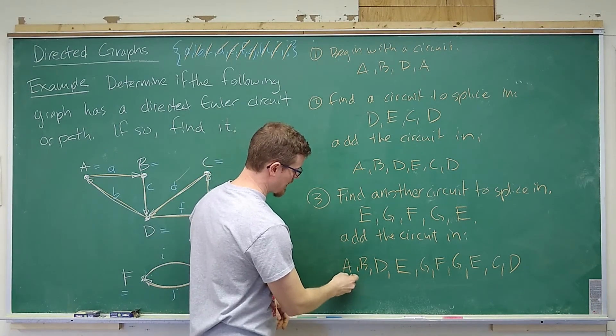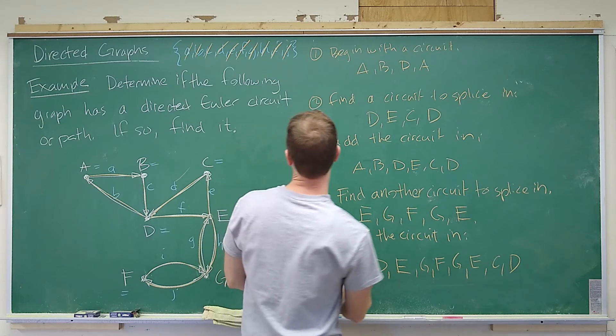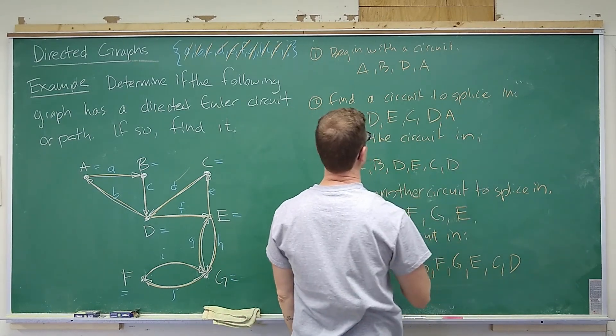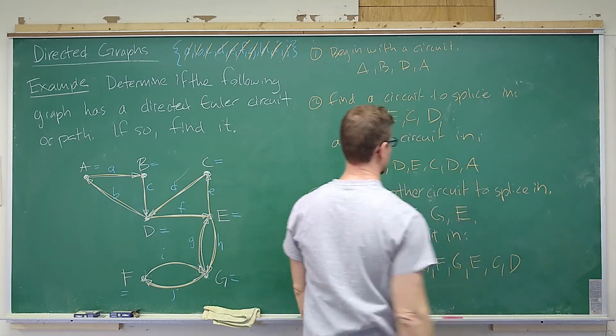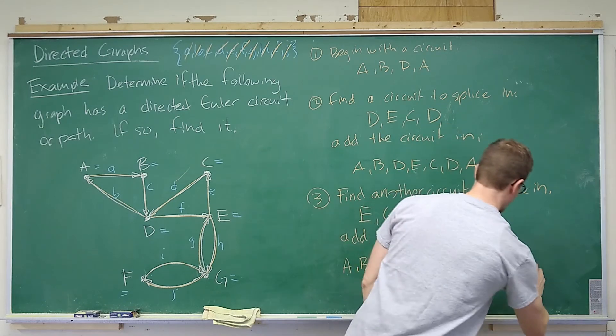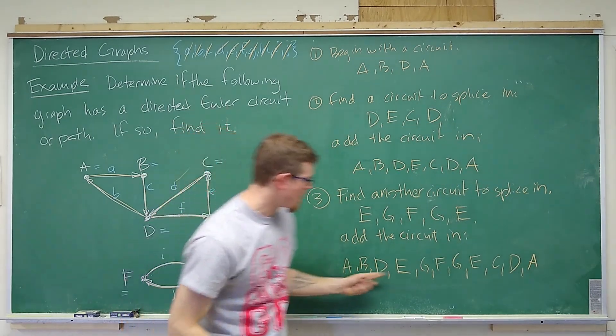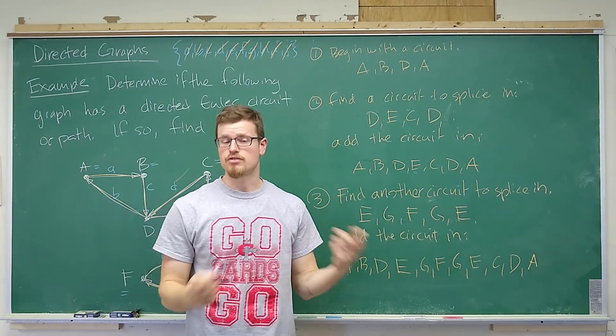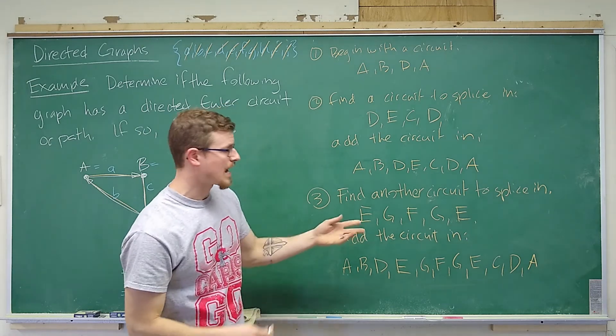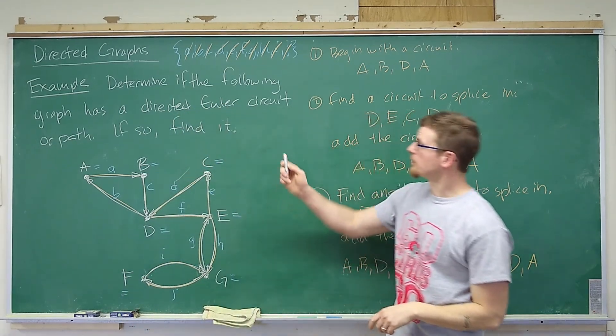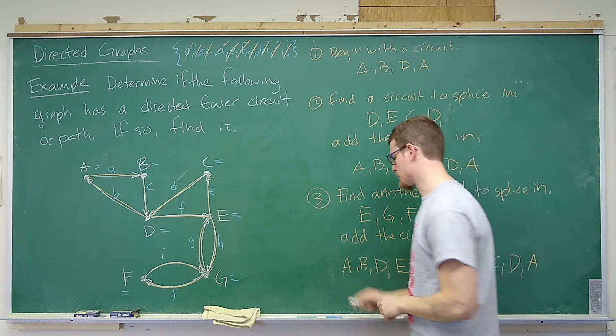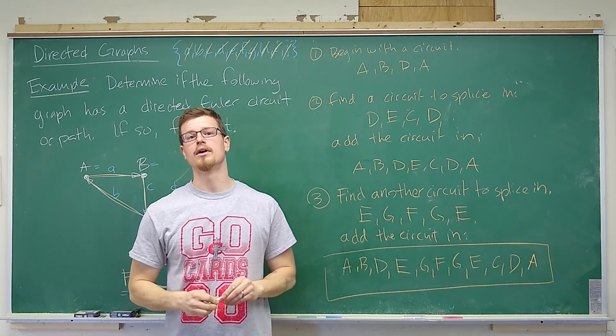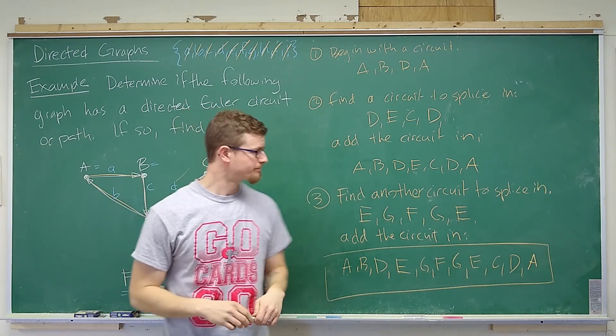So I've used up all of my edges, and I have gone from A and returned back to A. I have all of my edges used, and I begin and end at A. And I've traveled the correct direction on each edge. So that is how we can find a directed Euler circuit. Having all of the edges used is our directed Euler circuit.